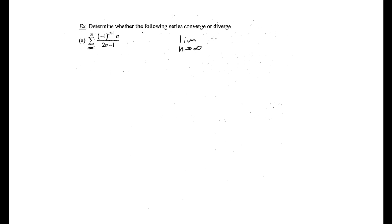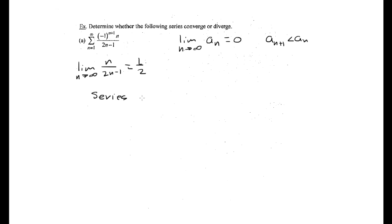In our first example, we are asked to determine whether the following series converges or diverges. This is an alternating series, so we're going to use the alternating series test, and we have to show two things. First, we have to show that the limit as n approaches infinity of a sub n equals 0. We have the limit as n approaches infinity of n over (2n minus 1), and that equals 1/2. So we already know the series diverges by the nth term test.